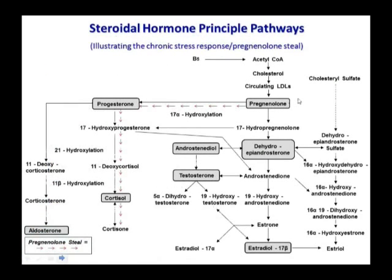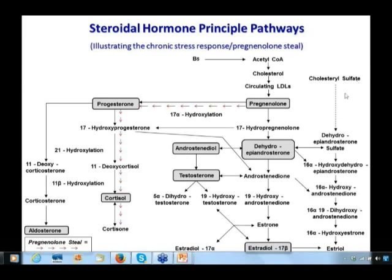Let's orient ourselves with respect to hormone physiology. When we talk about adrenal hormones, we're primarily talking about cortisol. All of this flows through the production of cholesterol, which is converted into pregnenolone. Pregnenolone can become DHEA, testosterone, and estrogen, and also becomes progesterone and eventually cortisol. This red arrow shows the preferential pathway under stress — the body will preferentially pull these hormone reserves to maintain cortisol levels, which can create deficits in testosterone, estrogen, DHEA, and even progesterone with advanced adrenal fatigue.